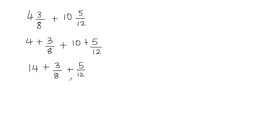Now we cannot add these fractions because we don't have a common denominator. We cannot add the fractions unless we have a common denominator. So to find the common denominator, we'll have to find the least common multiple of our denominators. The denominators are 8 and 12, so we're going to find the least common denominator.